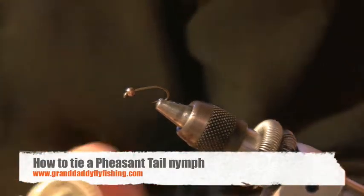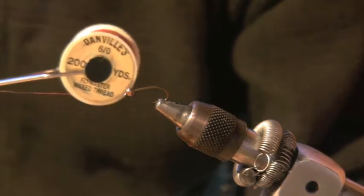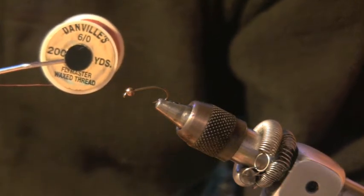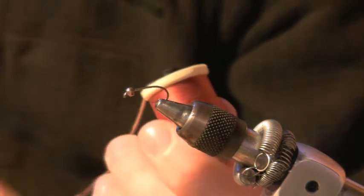Okay, we're going to do just the old standby pheasant tail. We're going to be using 6-0, 6-0 thread, brown, Danville.